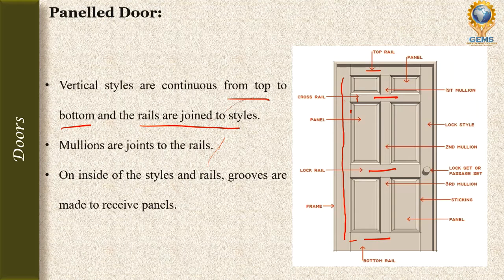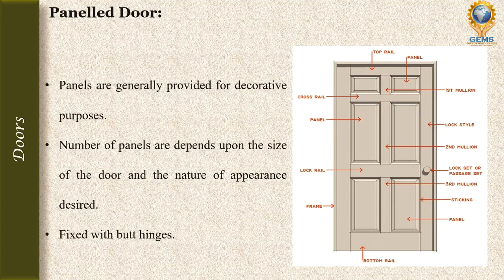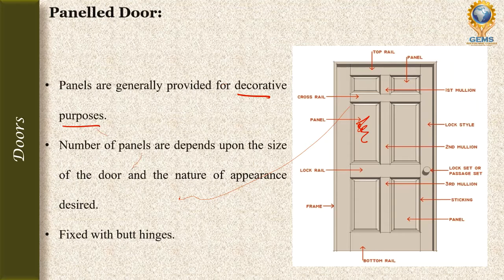The mullions are joined to the rails — bottom or intermediate — wherever they are fixed. Panels are generally provided for decorative purposes; we can use glass, wood, or any other material to make the door more decorative. The number of panels depends upon the size of the door and the nature of appearance desired. These doors are fixed with butt hinges.